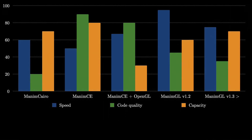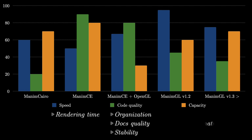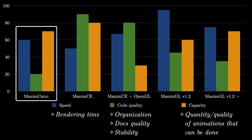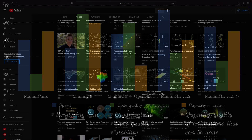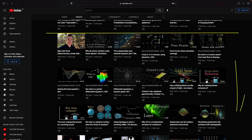Now we are going to compare these versions. The data is based on my experience — I have used all these versions since 2019. We will use the following criteria: speed, quality of the code, and the diversity of animations we can do with them. Starting with Manim Cairo, its speed is quite good, even a little faster than Manim CE on some occasions. The problem with Manim Cairo is that it is impossible to debug, as the organization and the way the code is built is very bad. The diversity of animations that can be done with it is quite high — just watch all of Grant Sanderson's videos until the end of 2019.